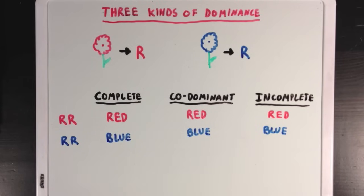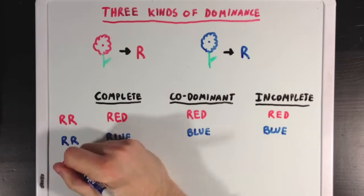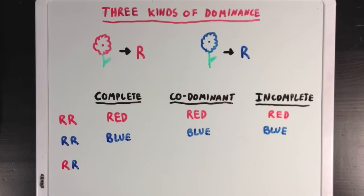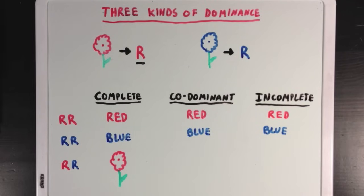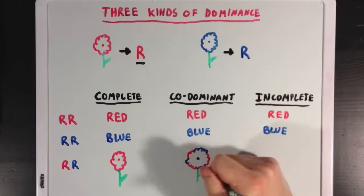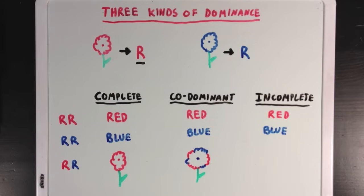These three dominance patterns differ when we look at the heterozygous example. We're already familiar with complete dominance — if the red R is dominant over the blue R, then the heterozygous phenotype would be a red flower. Codominance is when the heterozygous phenotype shows a flower with some red petals and some blue petals — both alleles are dominant together, and traits of both show up in the phenotype.